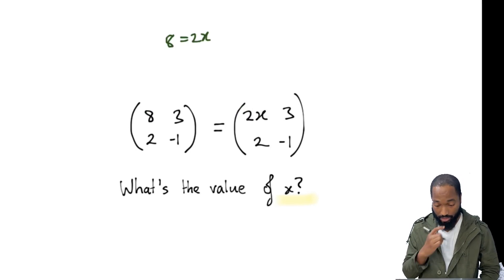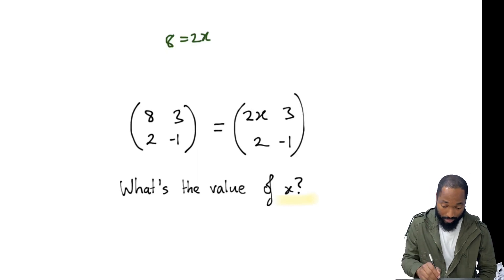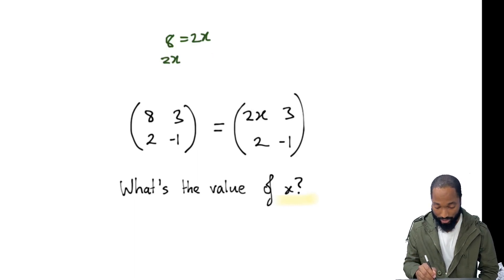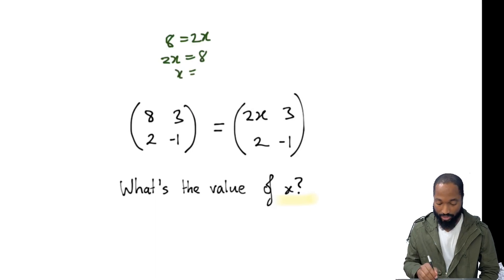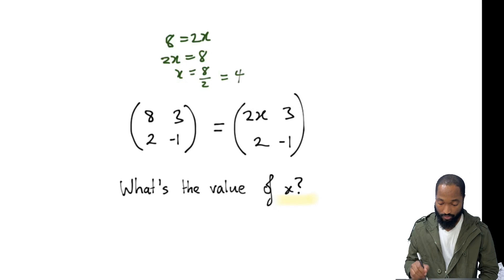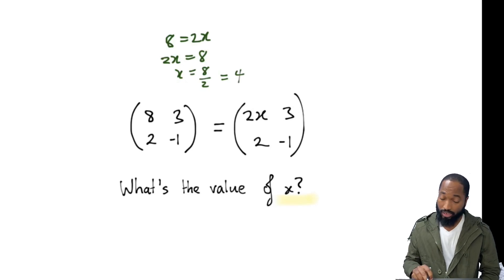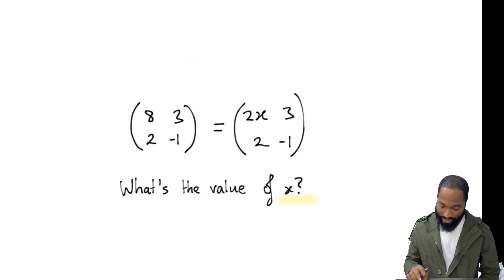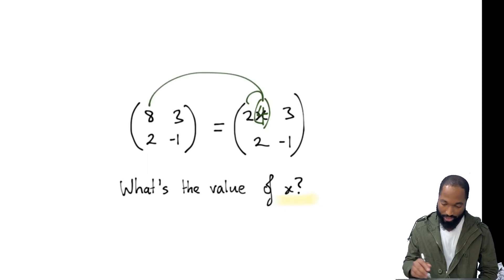I'll just say it back in terms of algebra. 2x should be equal to 8 — we like to write it this way. So x will be equal to 8 over 2, which is 4. You all got 4? So it means that this x is really 4 because 2 times 4 gives me 8. Making sense?